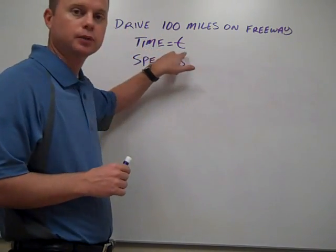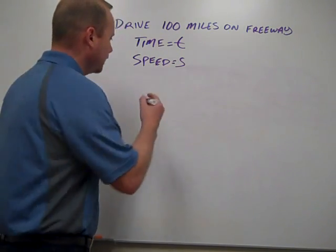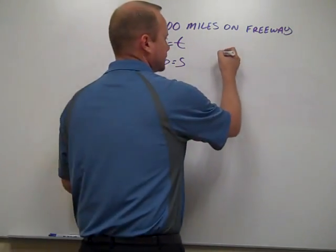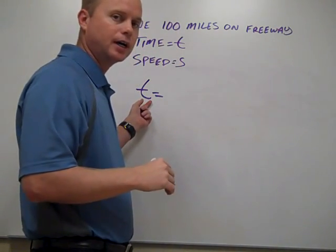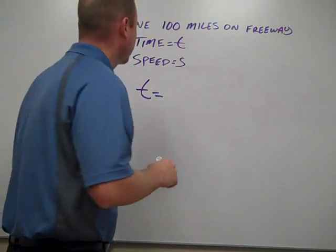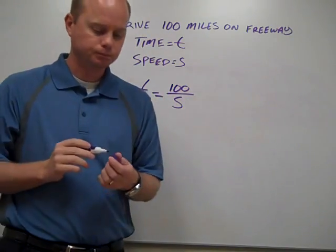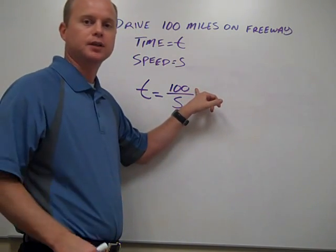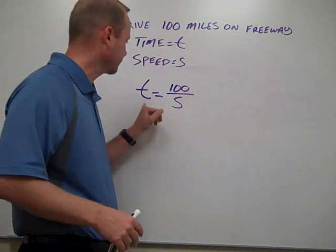If we say the time it takes equals t, and our speed equals s, we can use the formula distance equals rate times time. Solving for time gives us: time equals distance divided by speed. So we have t = 100 divided by s. For instance, if we went at 50 miles an hour, 100 divided by 50 gives us 2 hours — it would take 2 hours to get there.